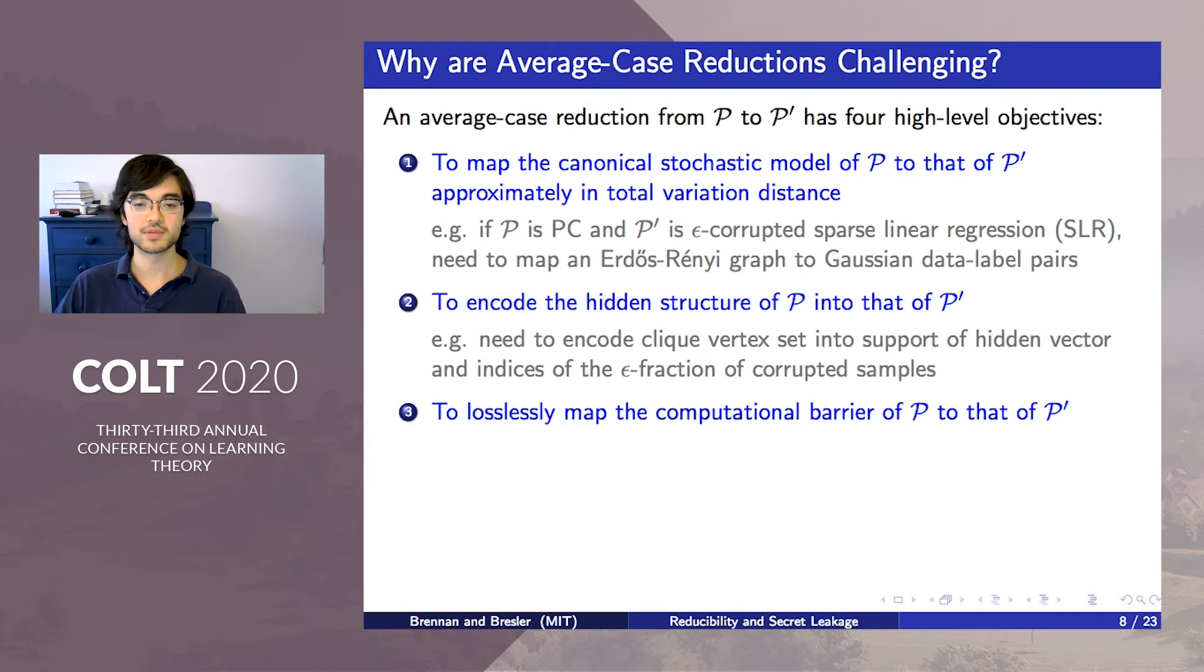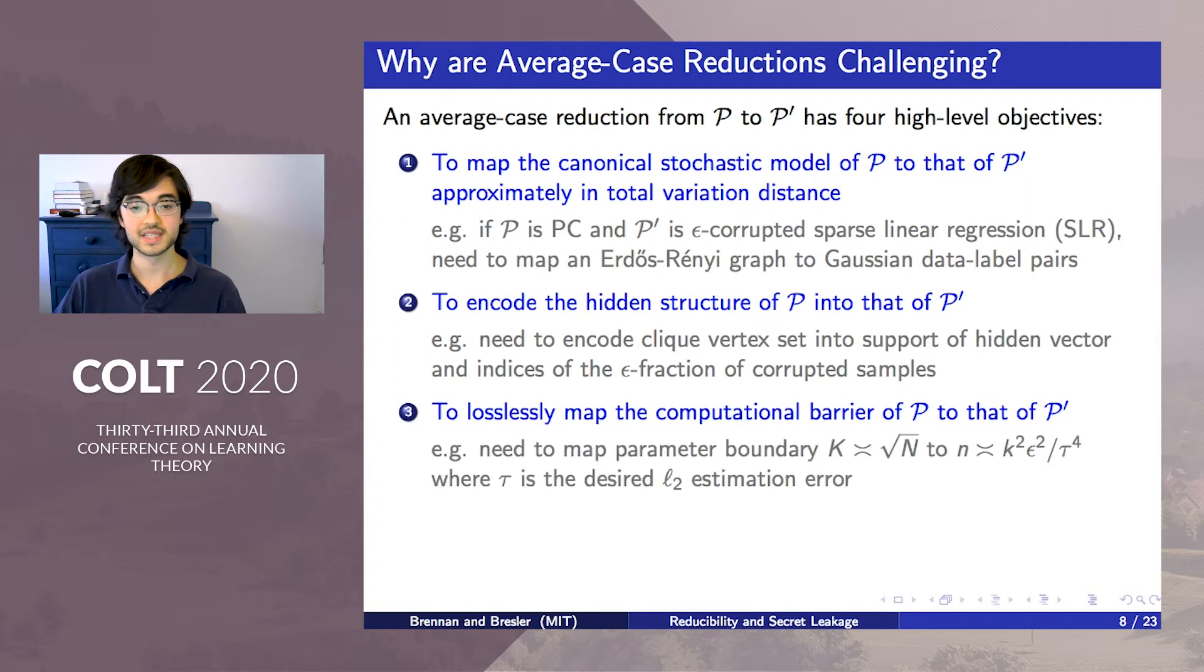Thirdly, the reduction needs to show tight lower bounds. In other words, map the computational barrier of P losslessly onto that of P'. In our example, this entails mapping the boundary of PC, where the clique size K is of order root the number of vertices, to the barrier where the number of samples N is of order K squared epsilon squared over tau to the fourth, where tau is the desired L2 estimation error, epsilon is the fraction of samples that have been corrupted, and K is the sparsity of the hidden vector.